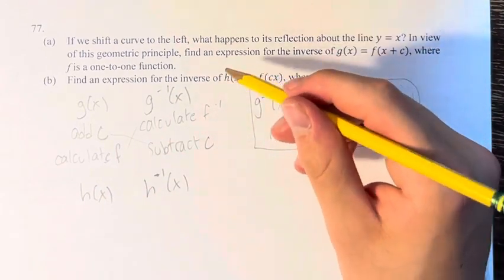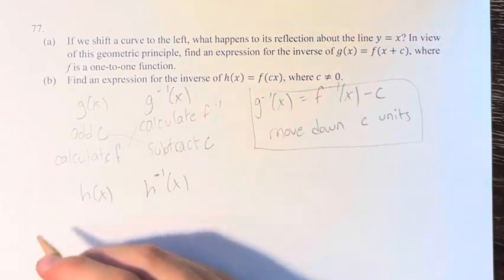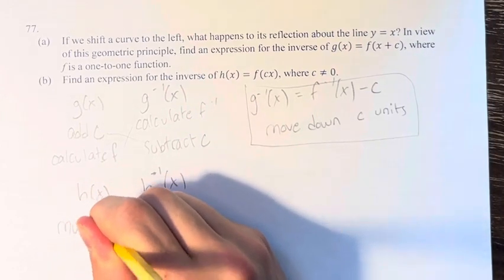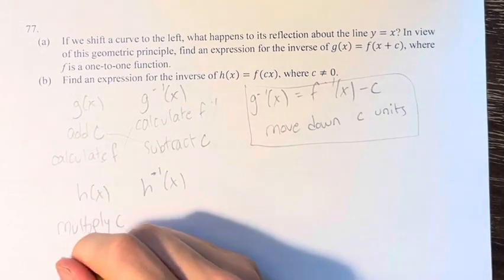So, in h, we take the value of x, and we multiply c, multiply by c, and then we calculate f.